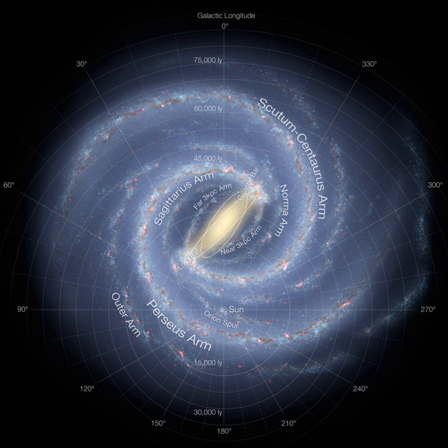Globular clusters also contain high numbers of Population II stars. It is thought that Population II stars created all the other elements in the periodic table, except the more unstable ones. An interesting characteristic of Population II stars is that despite their lower overall metallicity, they often have a higher ratio of alpha elements relative to Fe as compared to Population I stars. Current theory suggests this is the result of Type II supernovae being more important contributors to the interstellar medium at the time of their formation.